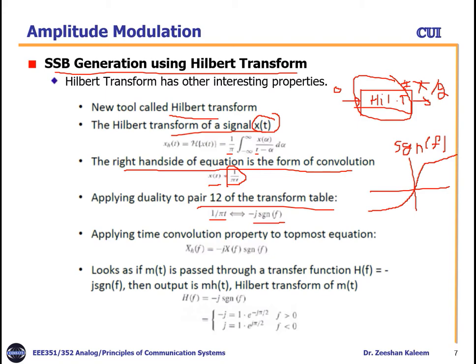So the result is X̂(f) = −j·X(f)·sgn(f), because the Fourier transform of 1/πt is −j·sgn(f). It looks as if m(t) is passed through a transfer function H(f), where H(f) = −j·sgn(f). The amplitude response is |H(f)| = 1 for all frequencies, and the phase response θ is −π/2 for f > 0 and +π/2 for f < 0.